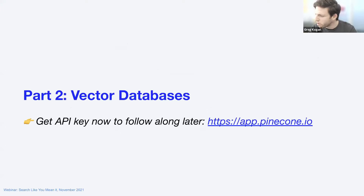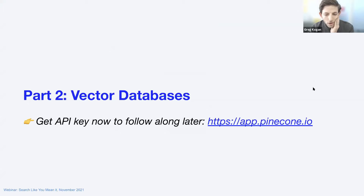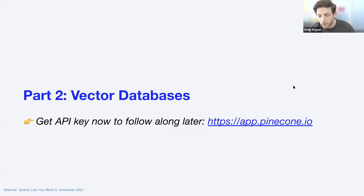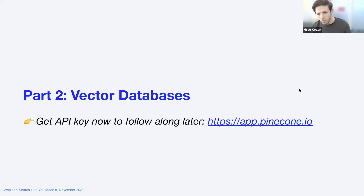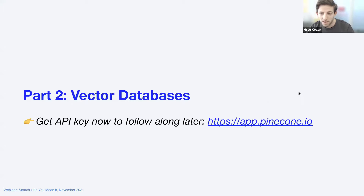Thank you, Niels. We already have almost 30 questions — we'll try to leave extra time at the end, and whatever we don't get to we'll address by email. So you've just heard about the NLP portion of semantic search: how to generate semantically similar vector embeddings for text or image data. Next, Dave will talk about using that in an actual production application. Quick note: there will be an interactive demo — if you want to follow along, go to app.pinecone.io to get an API key. Click 'Get Started' in the top right and you'll be ready to go.